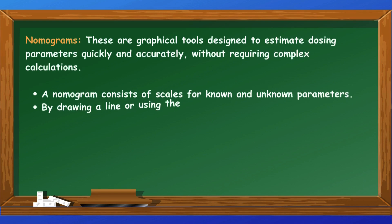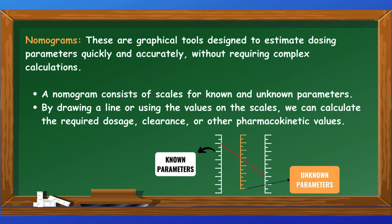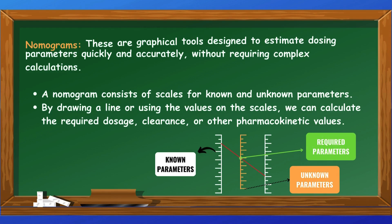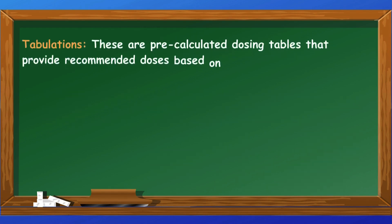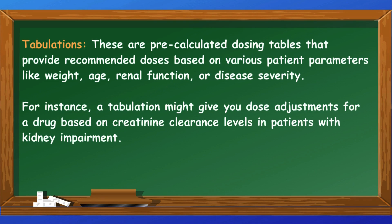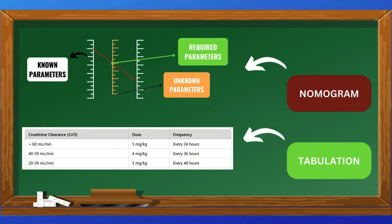What are nomograms and tabulations? Nomograms are graphical tools designed to estimate dosing parameters quickly and accurately without requiring complex calculations. A nomogram consists of scales for known and unknown parameters; by drawing a line using those values, we can calculate the required dosage, clearance, or other pharmacokinetic values. Tabulations are pre-calculated dosing tables that provide recommended doses based on various patient parameters like weight, age, renal function, or disease severity. For instance, a tabulation might give dose adjustments for a drug based on creatinine clearance levels in patients with kidney impairment. Both tools are invaluable when personalizing therapy, especially in cases of organ dysfunction or narrow therapeutic index drugs.